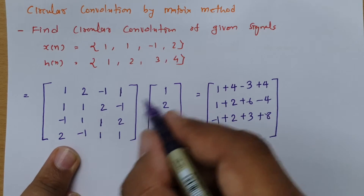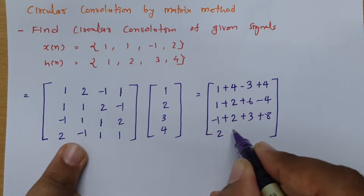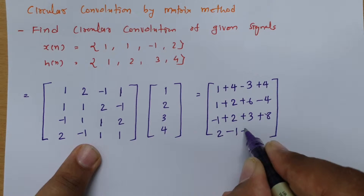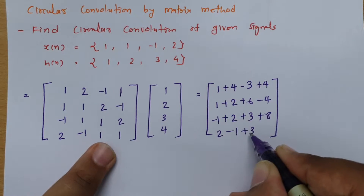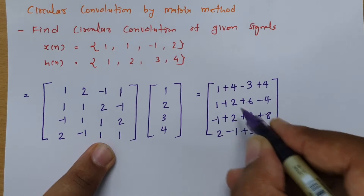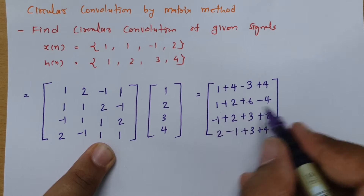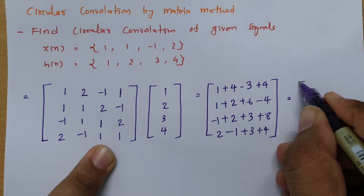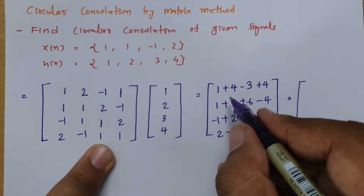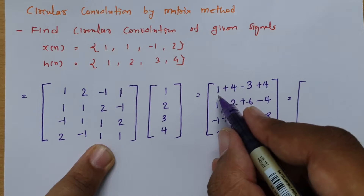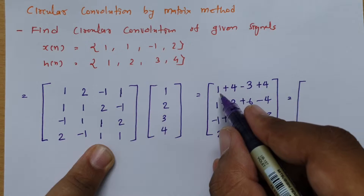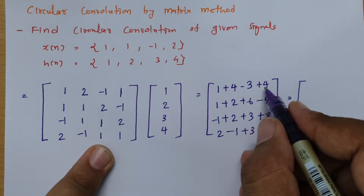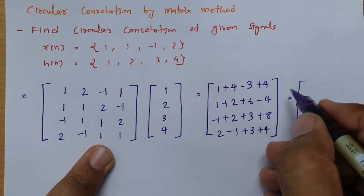Fourth row: 2 times 1 is 2, minus 1 times 1 is minus 1, 1 times 3 is 3, and 1 times 4 is 4. So solving these gives the circular convolution. This gives: 1 plus 4 minus 3 plus 4 equals 6, and for the second row: 5.